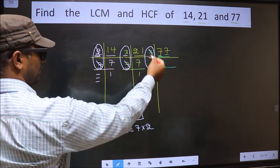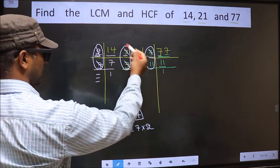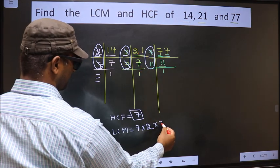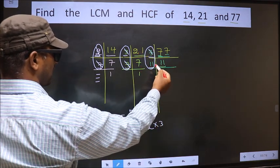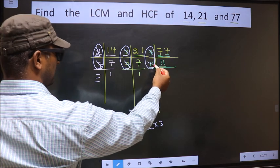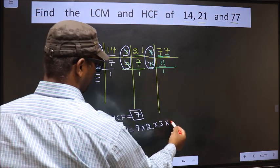Now 3 not cut. Do we have 3 here? No. So you cut 3 and write here. Now 11 is not cut. 11 is present in only one place, so you cut 11 and write here.